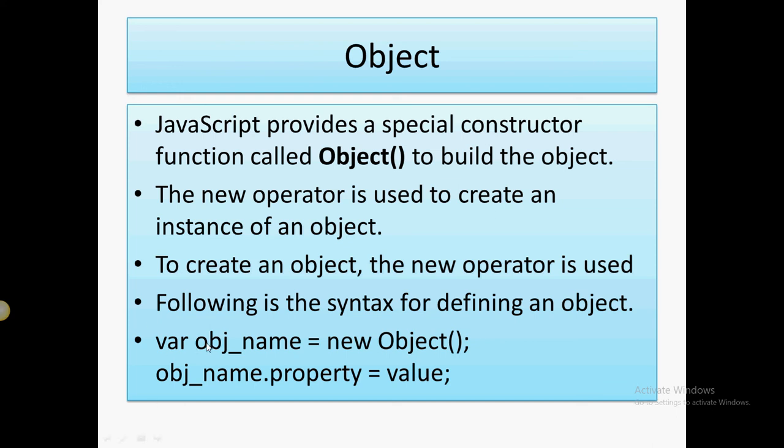The syntax is very simple: var and then you just create the name of the object and equals to new Object(). This Object class is used to create different types of objects. You just need to instantiate this object and a new object will be created. After that you can assign properties, you can assign methods, you can assign arrays, anything you can do using this object.